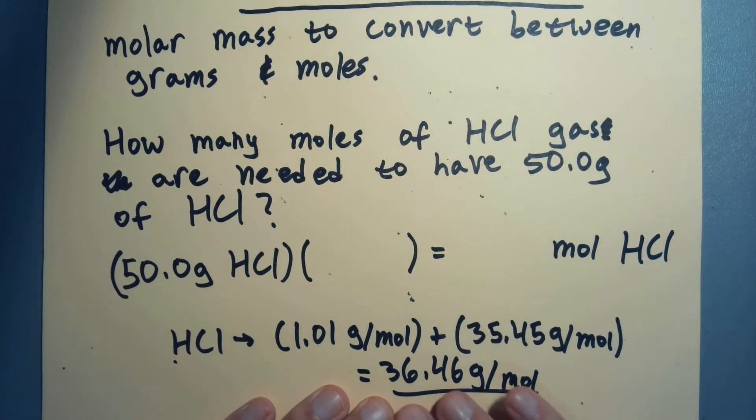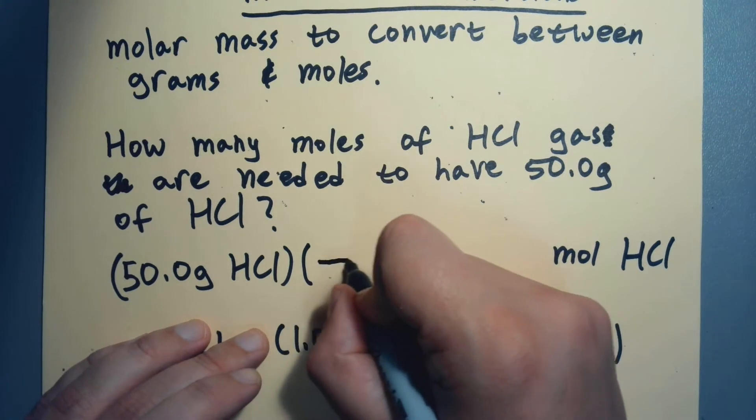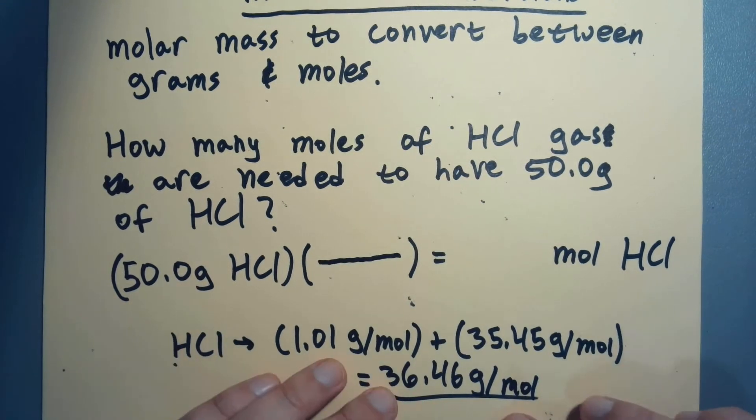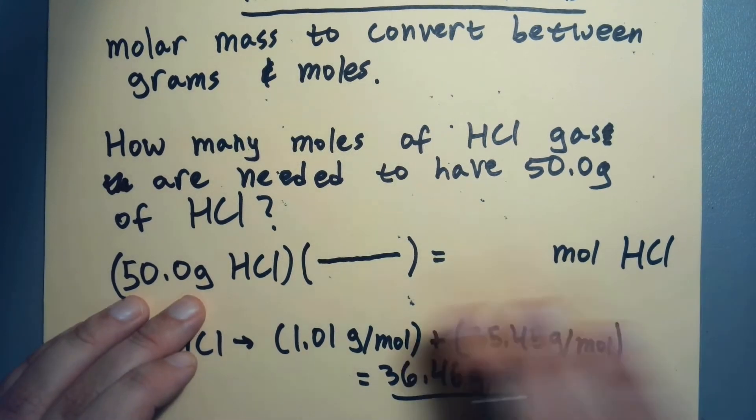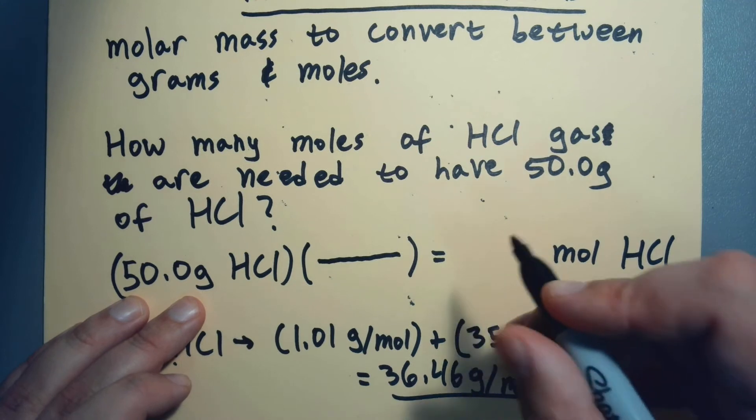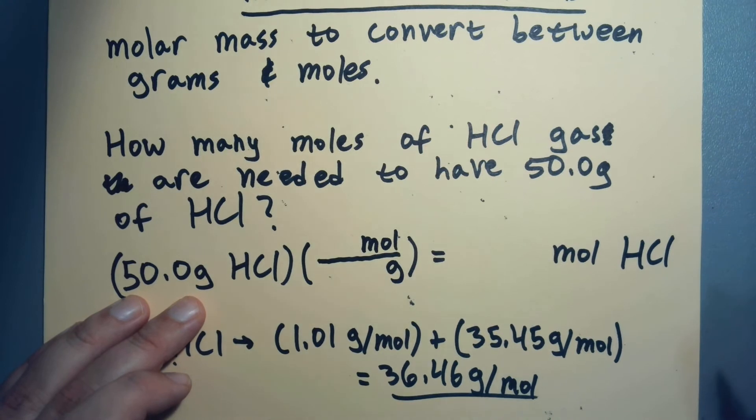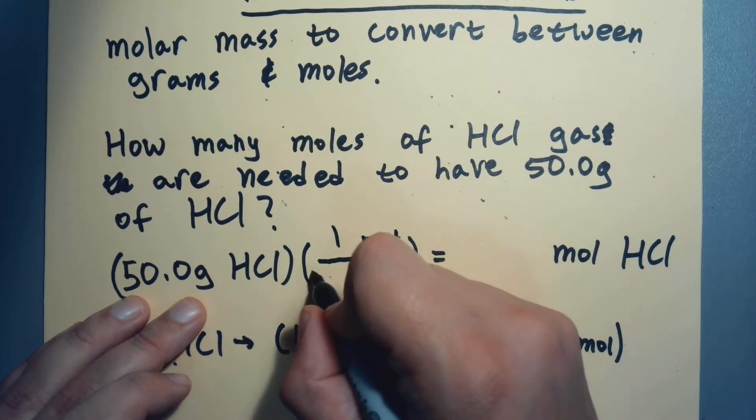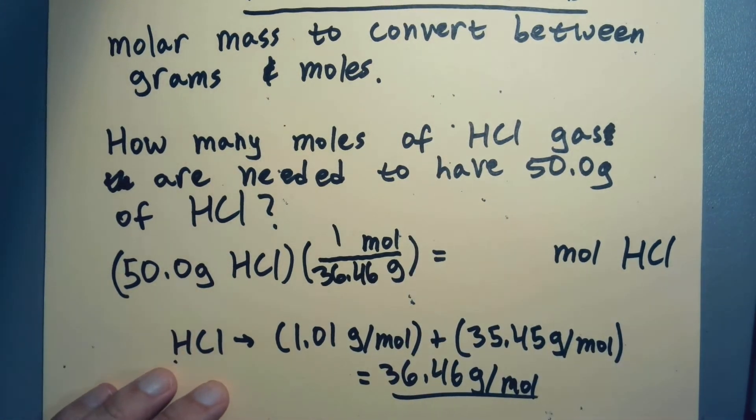But remember, it's a conversion factor, so we've got to ask ourselves: do we want grams on top and moles on the bottom, or do we need to flip this? Look, I'm going to have to cancel grams out, so that means I'm going to want grams down here and moles up here. So for every one mole, there's 36.46 grams. Then I just need a calculator.